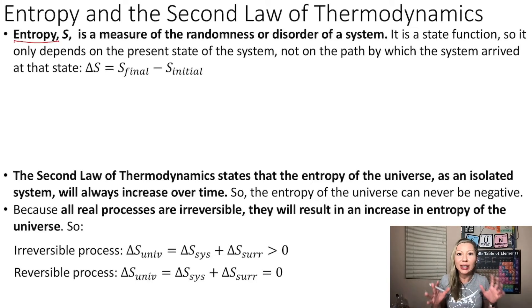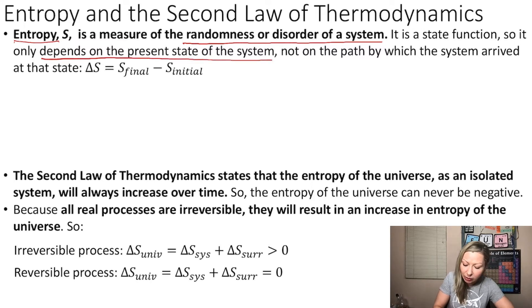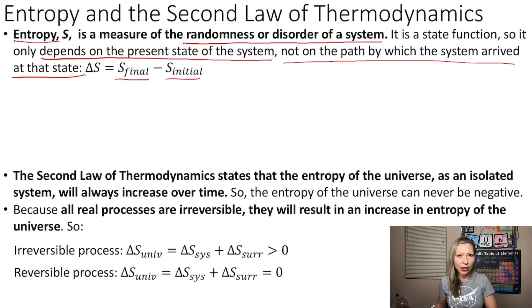my favorite thermodynamic quantity. It is actually the measure of the randomness or disorder of a system. It is a state function, so it depends only on the present state of the system, not on the path by which the system arrived at that state. So the change in entropy equals to the entropy at the final state minus the entropy at the initial state.